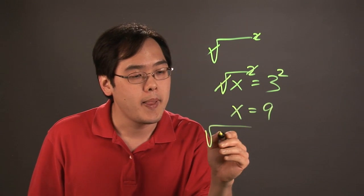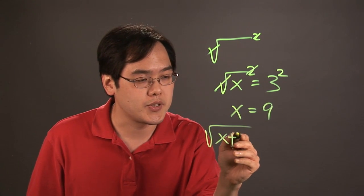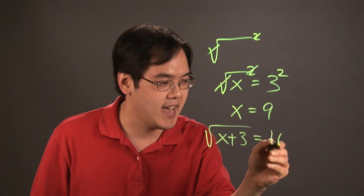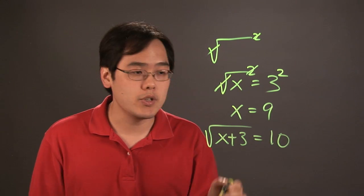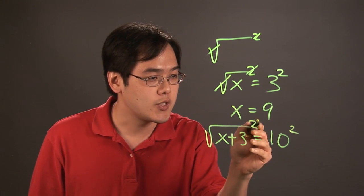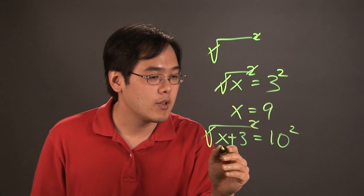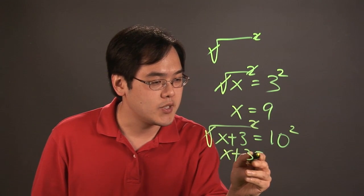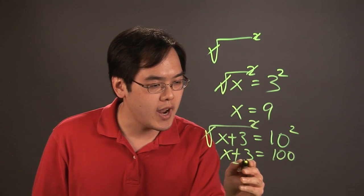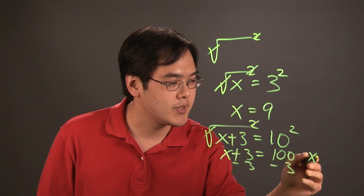Now, if there's something a little more complicated, you have square root of x plus 3 equals 10. To get rid of the square root, you square both sides. The square and the square root are gone. You're left with x plus 3. 10 squared is 100. And then to solve for x, just subtract 3 on both sides. You have x is equal to 97.